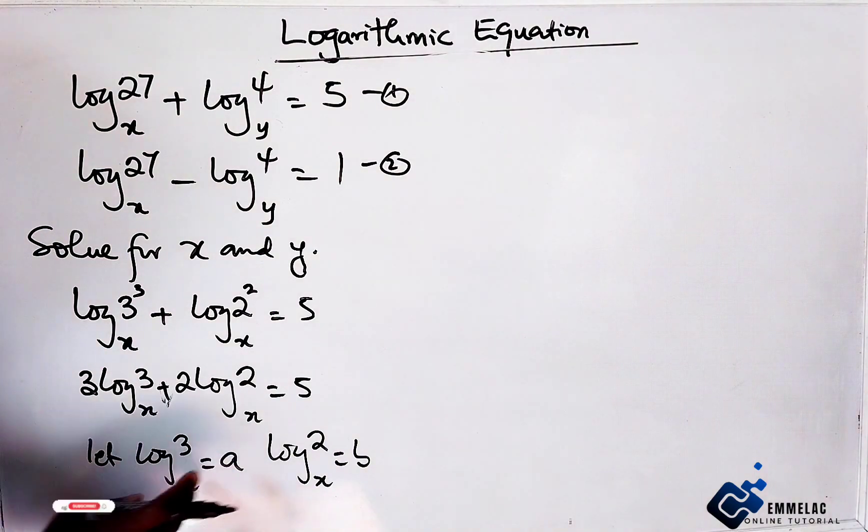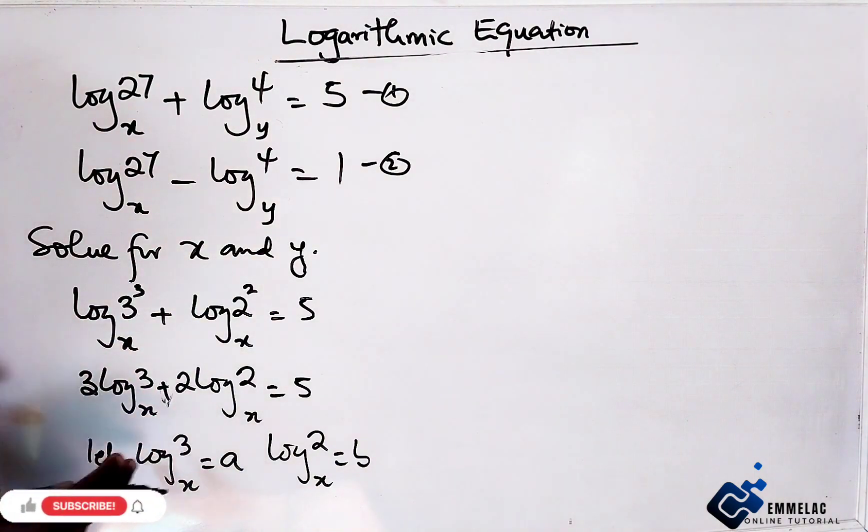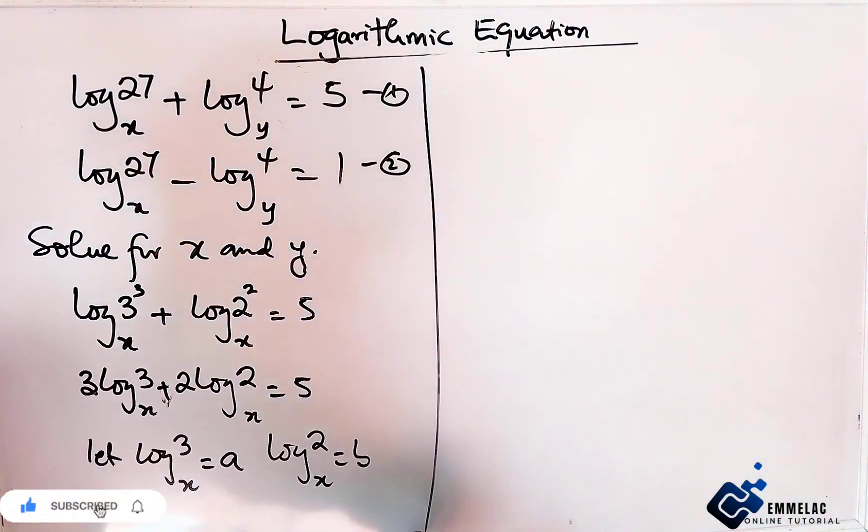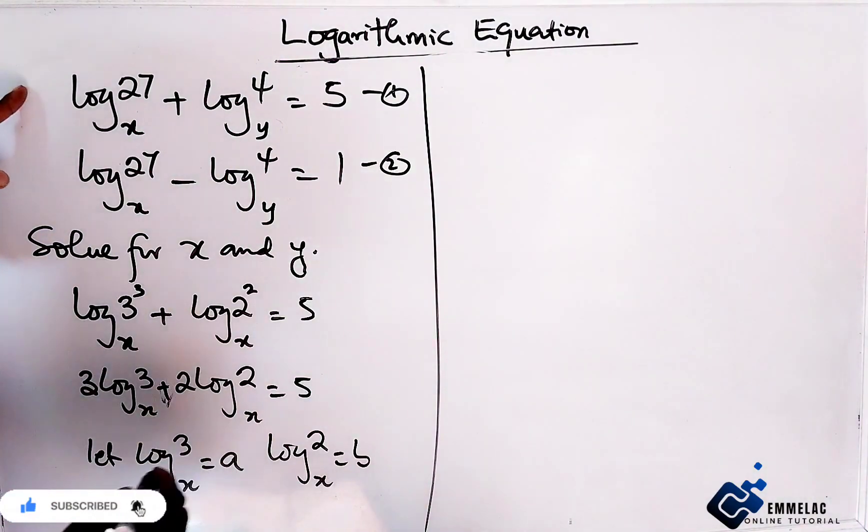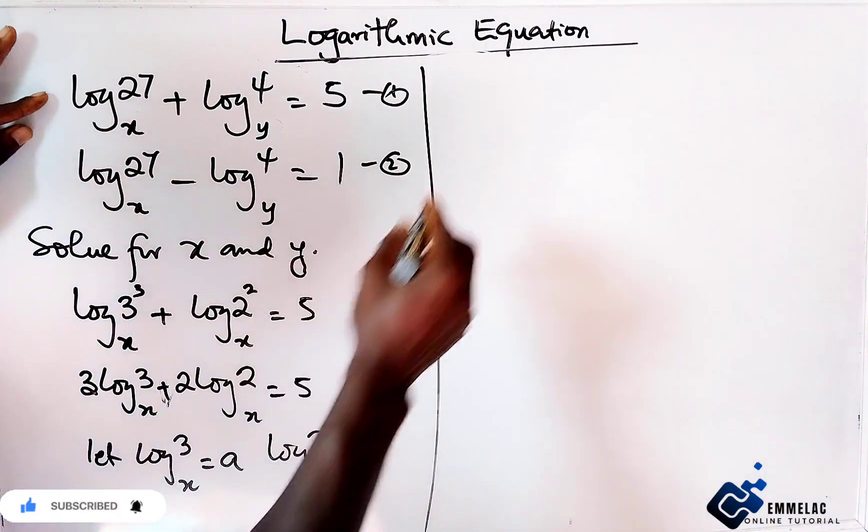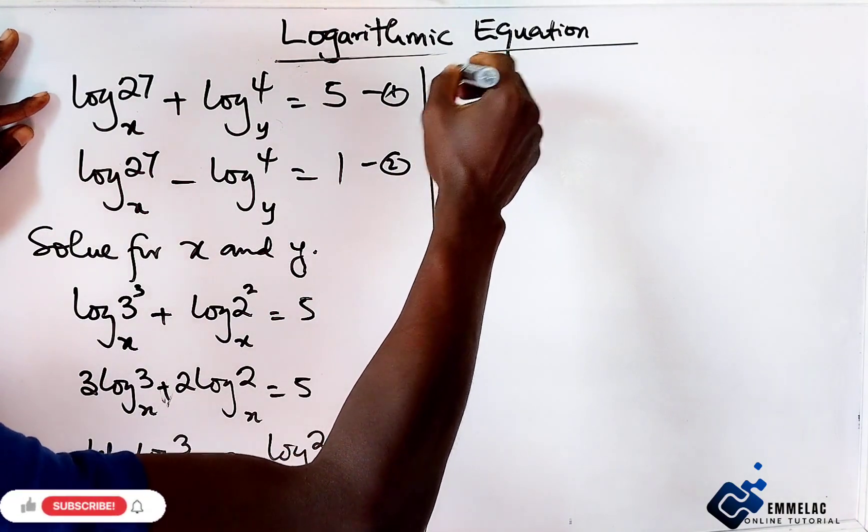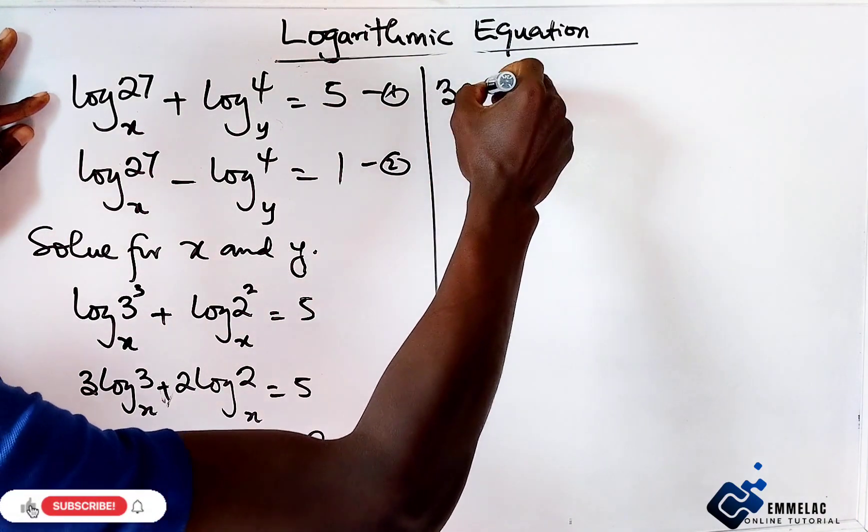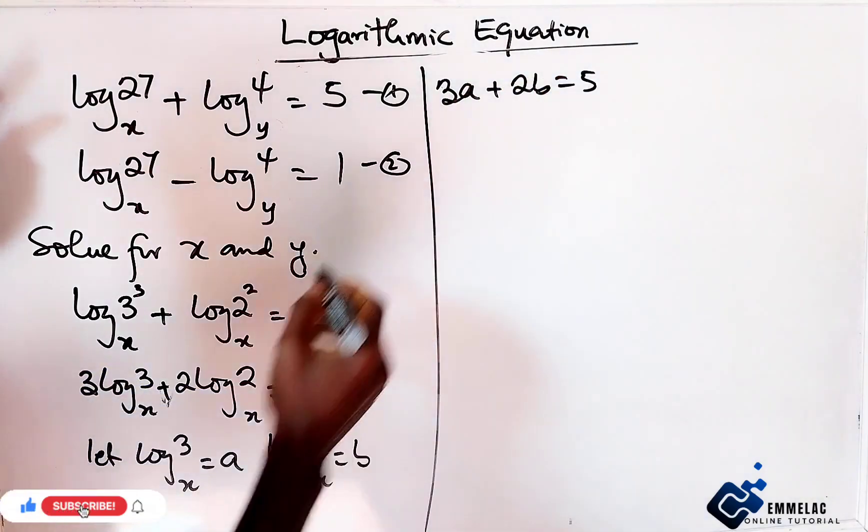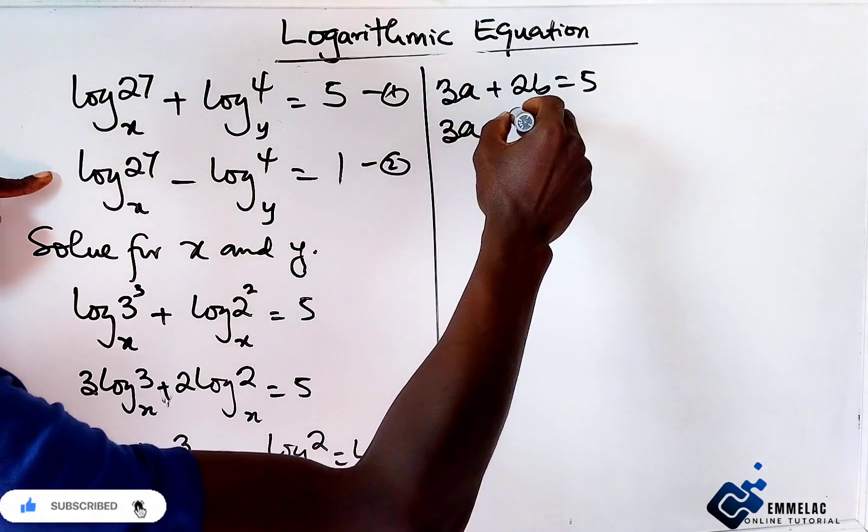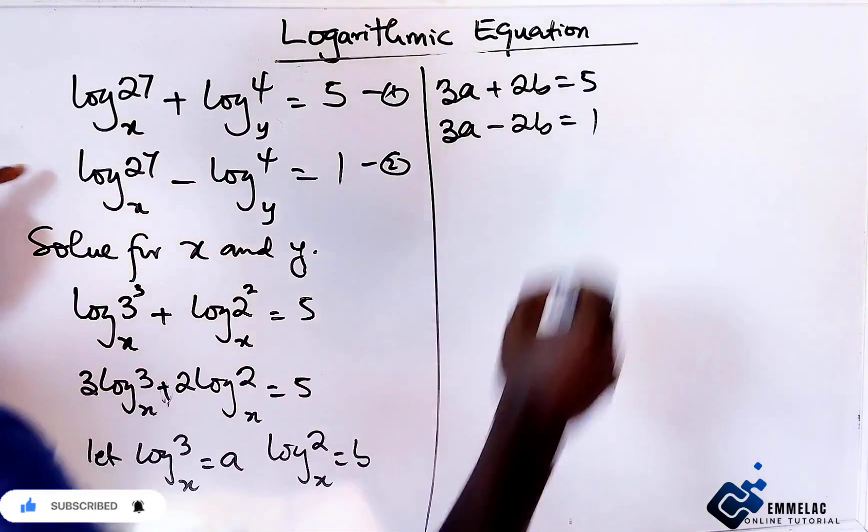Now substituting log base x of 3 and log base x of 2 for a and b. From here, equation 1 becomes 3a plus 2b equals 5, and equation 2 becomes 3a minus 2b equals 1.